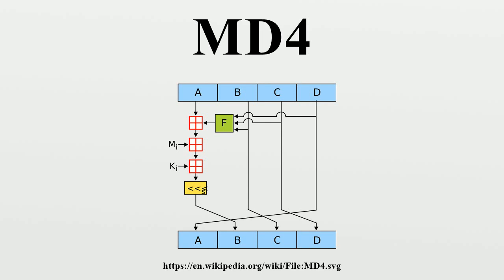MD4 equals 1B69A46B811185C194762ABEA90. Even a small change in the message will result in a completely different hash — for example, changing 'd' to 'c' gives MD4 equals B86E130C7028DA59E672D56AD0113DF. The hash of the zero-length string is MD4 equals 31D6CFE0D16A931B73C59D7E0C089C0.